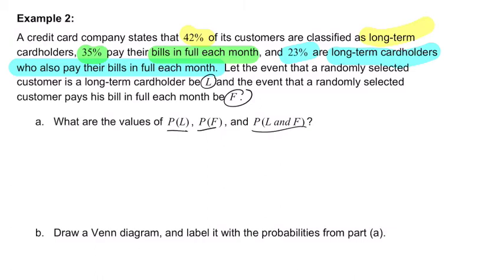The probability of L that you are a long-term cardholder is the first data we were given. It's 42%. So the probability of L happening is 0.42. What's the probability of F happening, which is pay your bill in full? That's 0.35. And I'll put zeros in front so we can be clear about this. 0.42, 0.35.